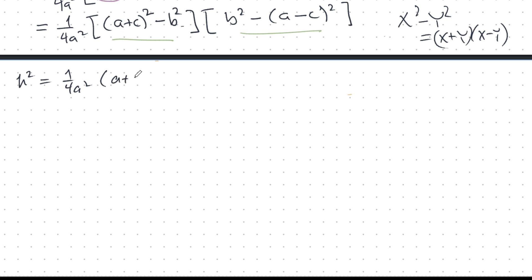So, I have A plus C plus B. That's the first factor for this one. And then A plus C minus B. That's the second factor for this one. And then here, I have B plus A minus C. And then finally, B minus A plus C. Be careful about the signs.